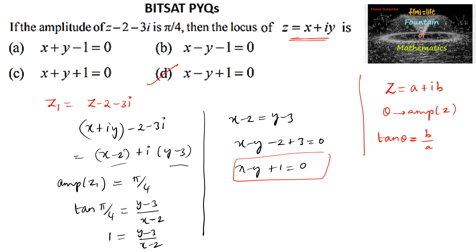Therefore, the locus of z = x + iy is x - y + 1 = 0.